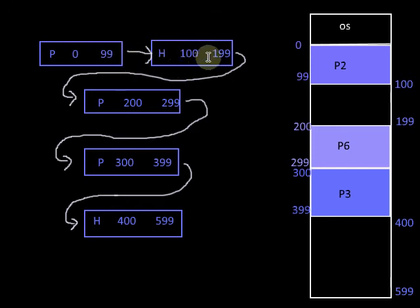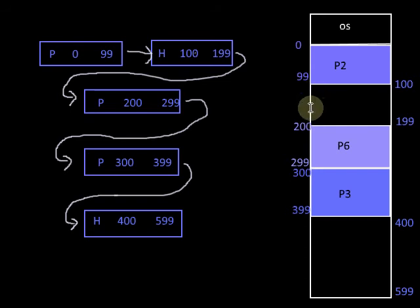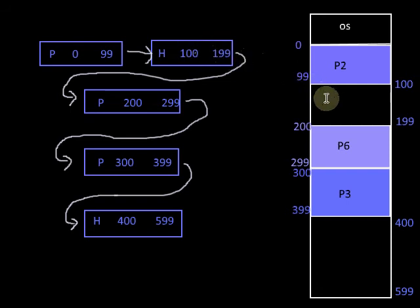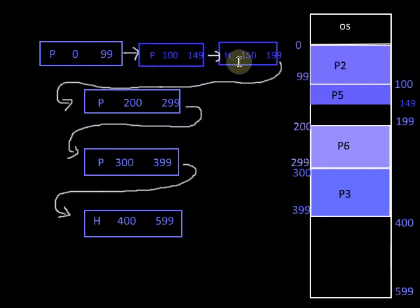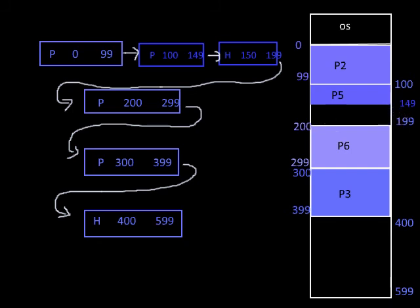It is always better to keep the nodes in increasing order of their starting address — that is, the order in which the partitions appear in memory. Now suppose we load a new process into a partition and the process occupies half the memory of that partition. The node corresponding to this hole has to be split into two nodes: one node for the process with starting address 100 and ending address 149, and the next node for the hole with starting address 150 and ending address 199.